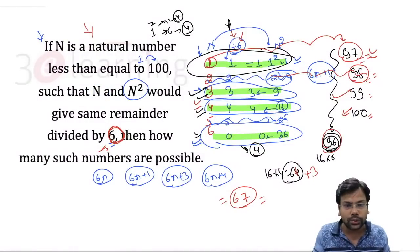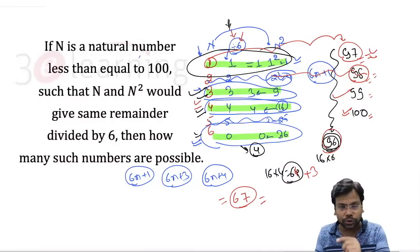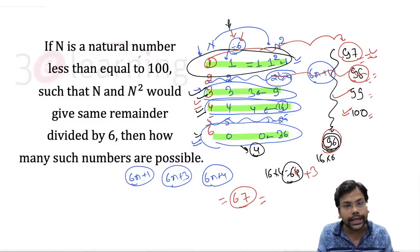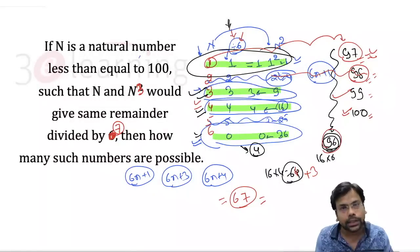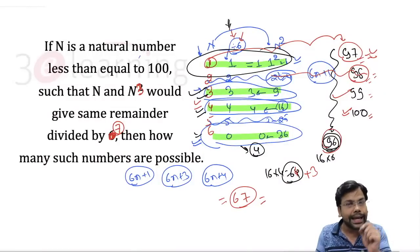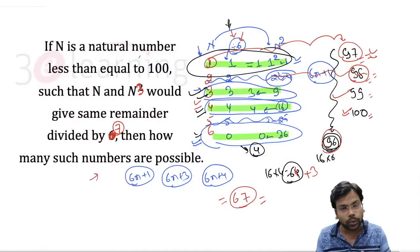Now for homework: I've modified the question slightly. If n is a natural number less than or equal to 100, such that n and n² give the same remainder when divided by 7, how many such values are possible? Try solving it using the same approach.